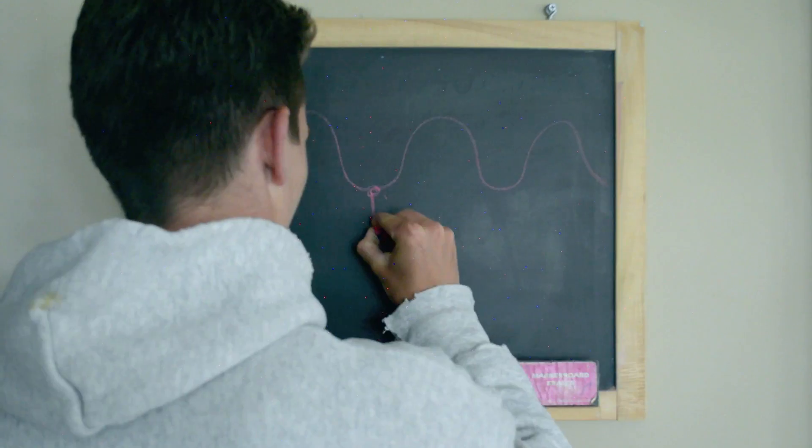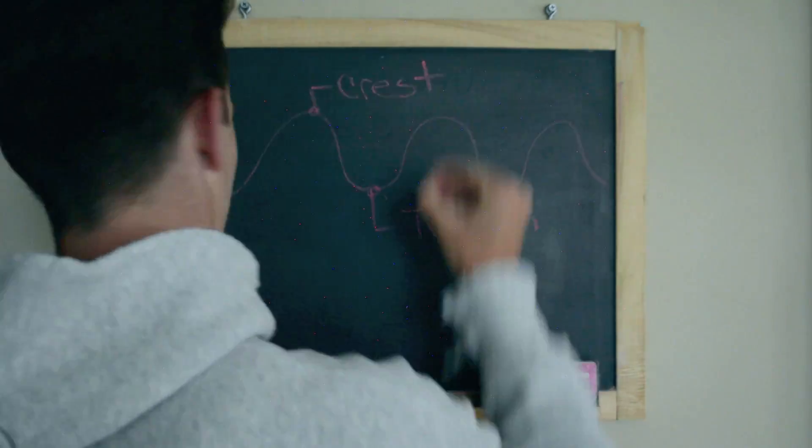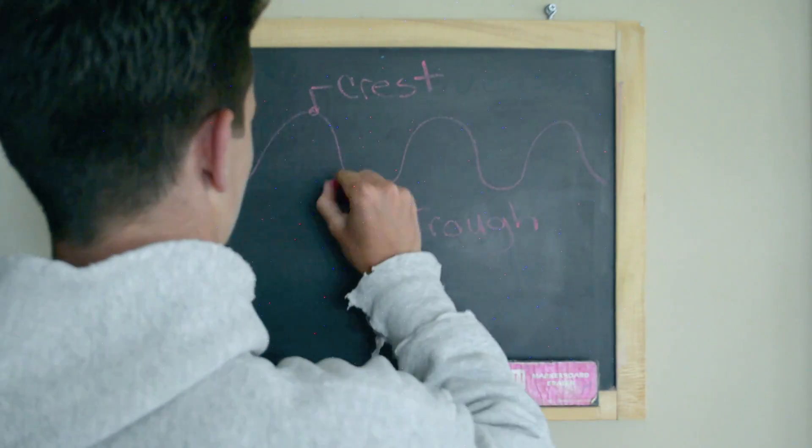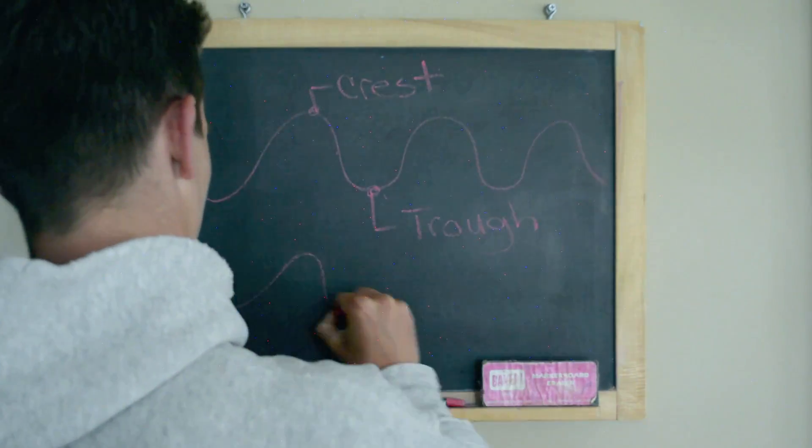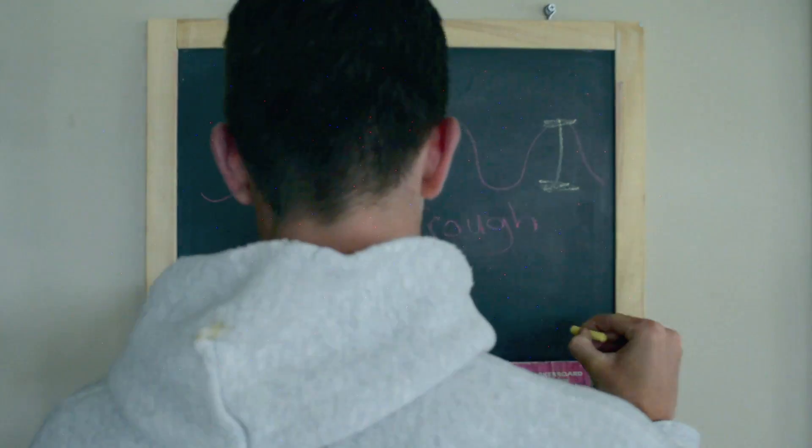Characteristics of progressive waves are the wave crest, trough, height, and amplitude.